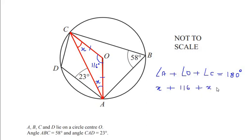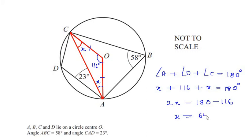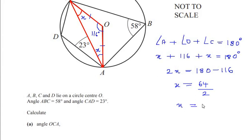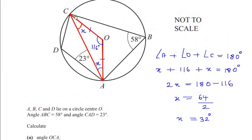Angle A is x, angle O is 116 degrees, and angle C is x, so this equals 180 degrees. x and x add together to give 2x equals 180 minus 116, so x equals 64 divided by 2, which is 32 degrees. Since we took angle C as x, we can now write angle OCA equals 32 degrees.